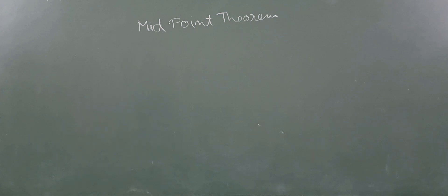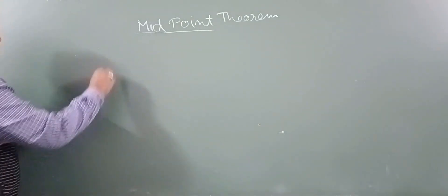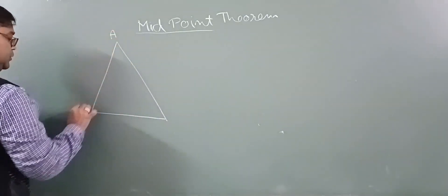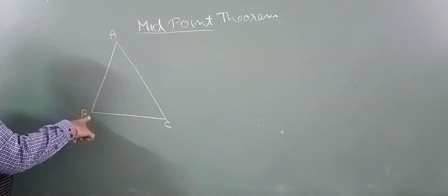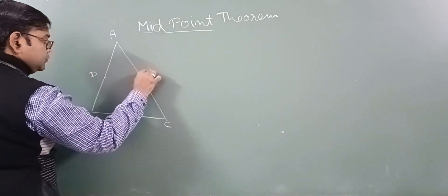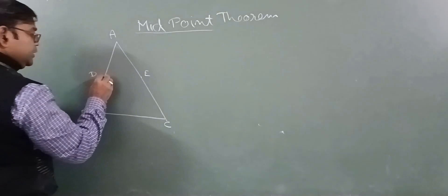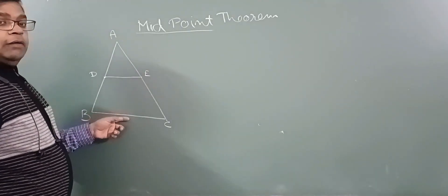Good morning students. Today we are going to discuss the midpoint theorem. As the name signifies, this theorem is about the midpoints of the sides of a triangle. For example, if we have a triangle ABC and D and E are the midpoints of sides AB and AC respectively, then this theorem says that the line segment joining the midpoints of any two sides is parallel to the third side and half of the third side.